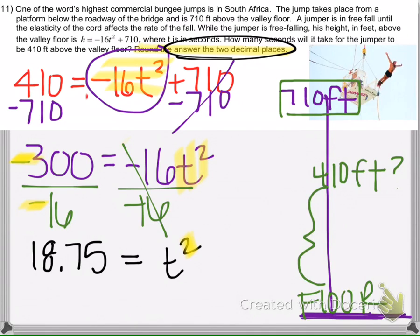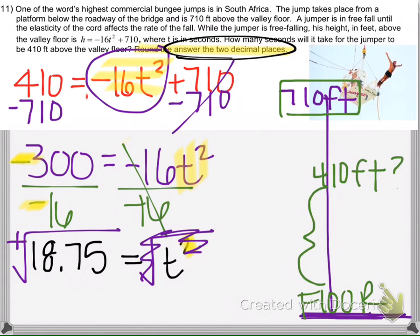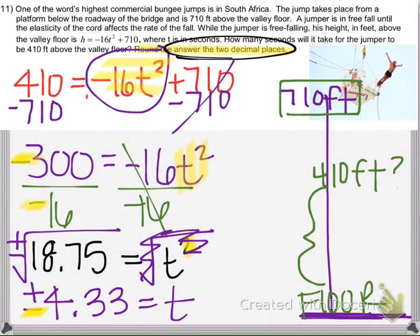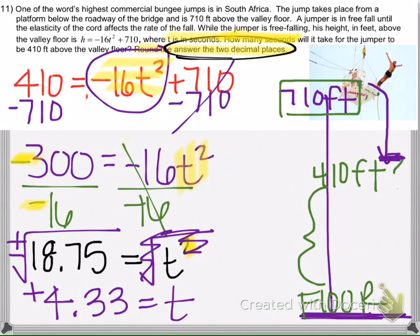To get rid of the exponent of 2, we're going to square root both sides. Remember, when we square root both sides, we need a plus or minus. Putting that in the calculator gives us positive and negative 4.33 for T. But we're not going to use negative 4.33 because T is time in seconds — you can't have negative seconds.